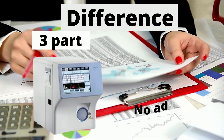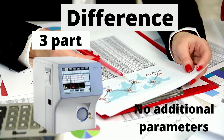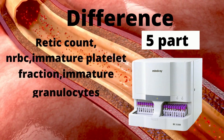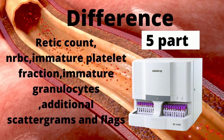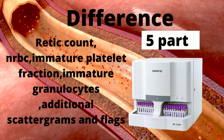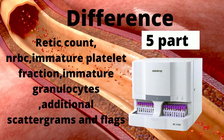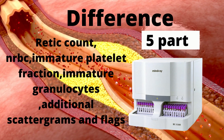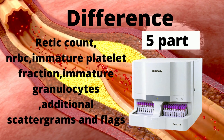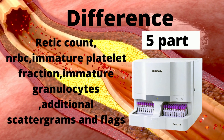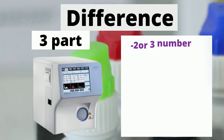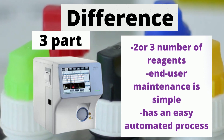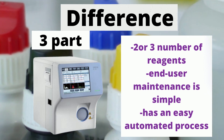The three-part analyzer has no additional parameters. But the five-part analyzer has reticulocyte count, NRBC, immature platelet fraction, immature granulocytes, additional scattergrams, and flags.